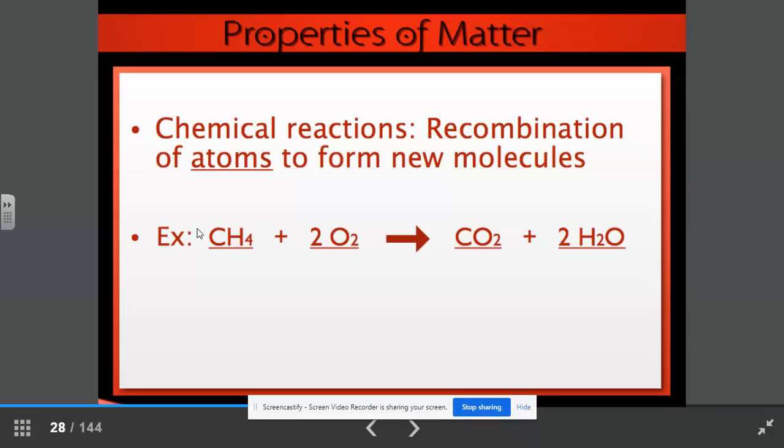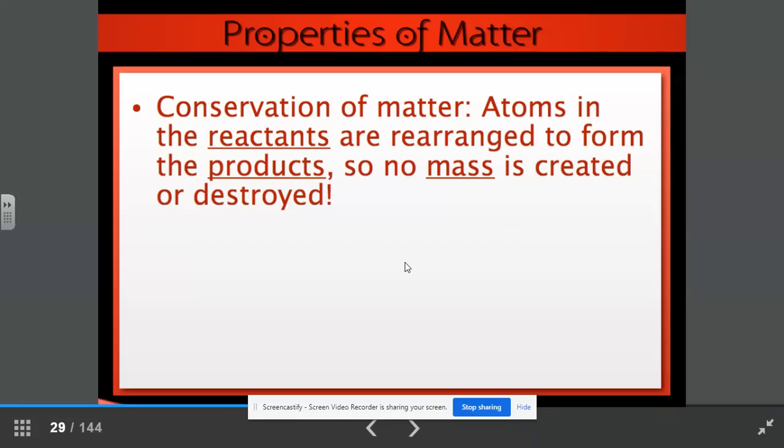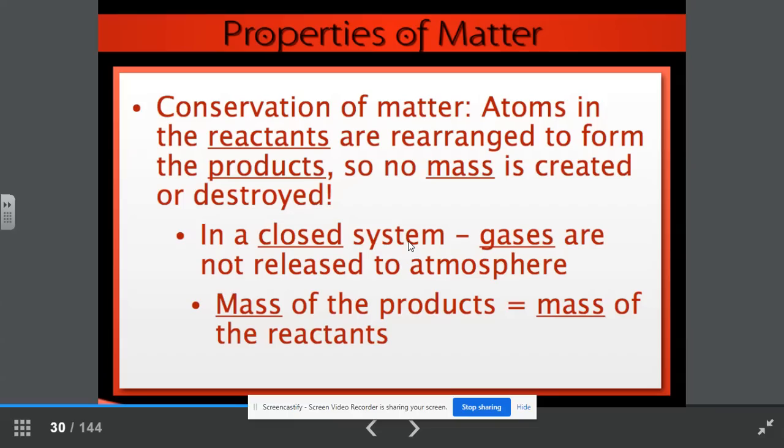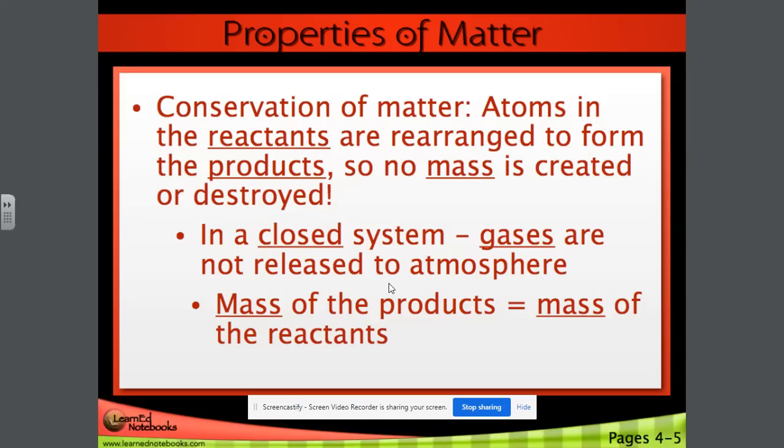This side of the equation, these are known as our reactants. Remember the RAP model, reactants, arrow, and then these are the products, P for products. The conservation of matter tells us that atoms in the reactants are rearranged to form the products. So no mass has been created or destroyed. In a closed system, remember gases are not released to the atmosphere. The mass of the products is going to equal the mass of the reactants.